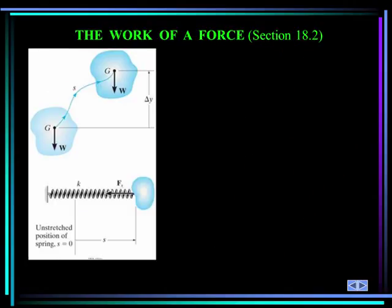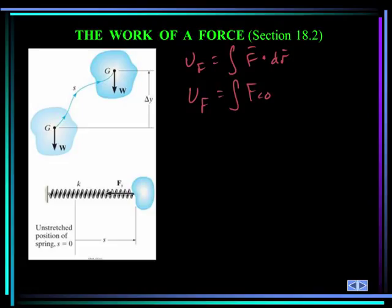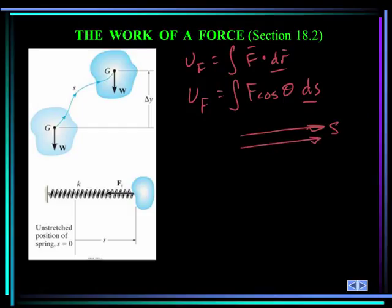The work done by a force can be written as the integral of F dot dr. As a scalar, the work done by a force is the integral of F cosine theta dS, where S is a distance measurement. We take the component of the force in the direction of motion and integrate to get the work done by force F.